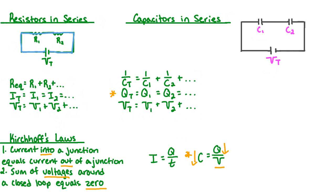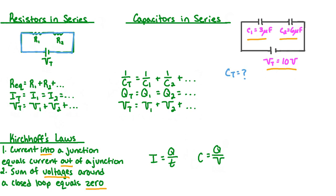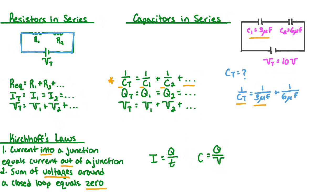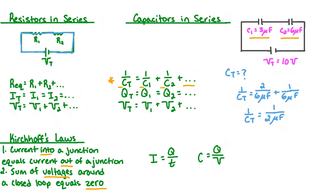In parallel, we get more charge stored for each capacitor we hook up to the battery. We have chosen values for our diagram such that the potential difference of the battery is 10 volts, the capacitance of capacitor 1 is 3 microfarads, and the capacitance of capacitor 2 is 6 microfarads. Using the equation 1 over total capacitance equals 1 over C1 plus 1 over C2: 1 over Ct equals 1 over 3 microfarads plus 1 over 6 microfarads. Using a least common denominator of 6 microfarads, we multiply 1 over 3 by 2 over 2, giving us 2 over 6 microfarads. Adding 2 over 6 plus 1 over 6 gives us 3 over 6, which reduces to 1 over 2 microfarads.